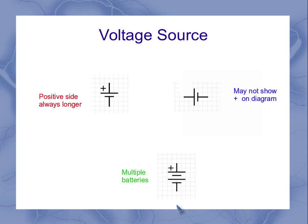Sometimes you'll see a symbol like this, which can be used to represent multiple batteries. You can think of it as one where I've got a negative to positive and then another negative to positive lined up with it.